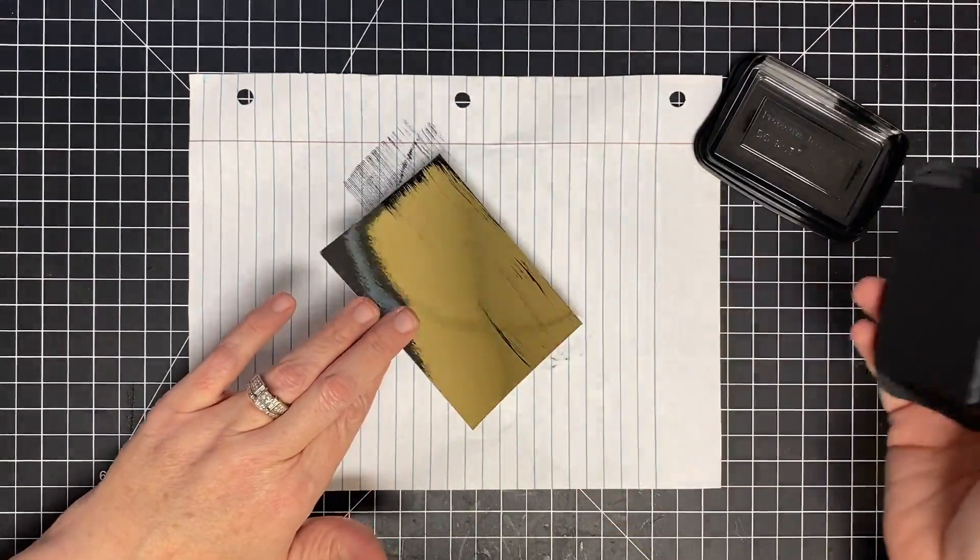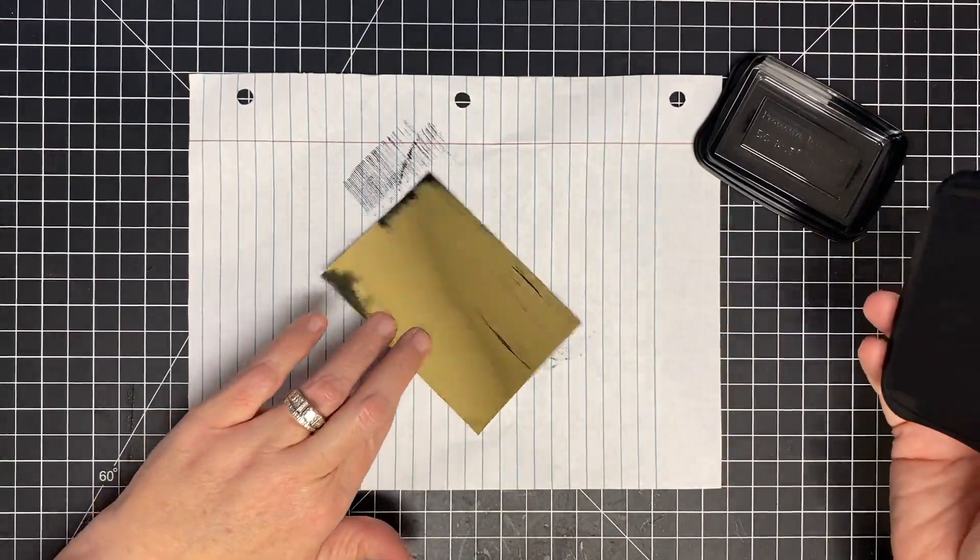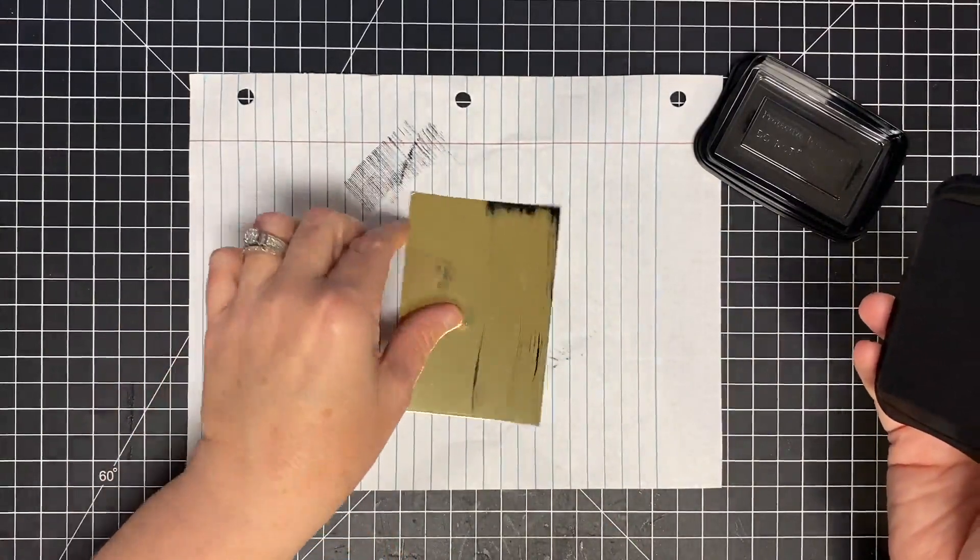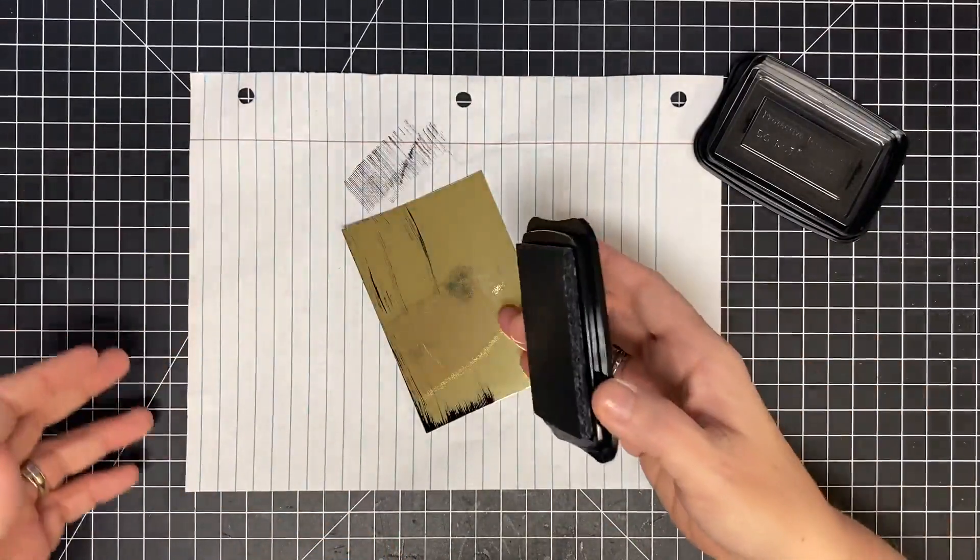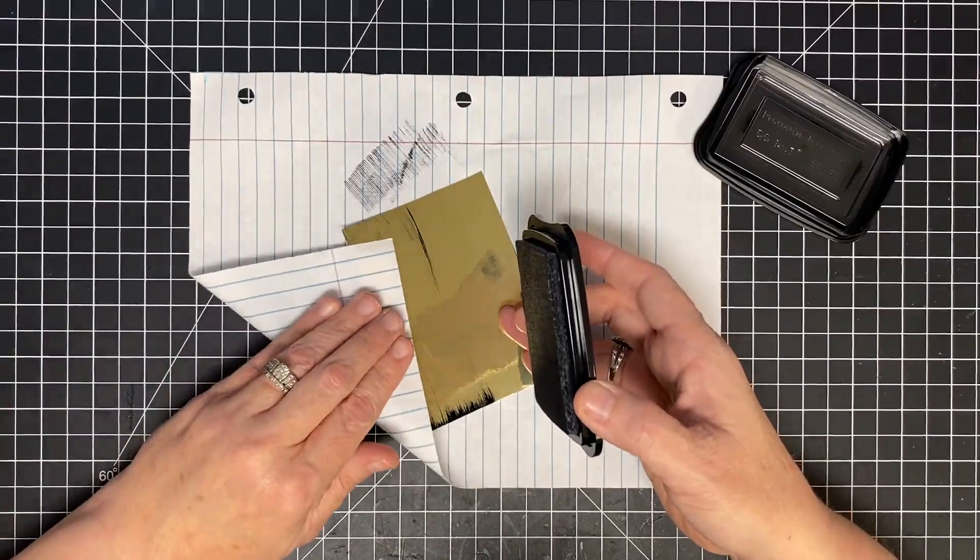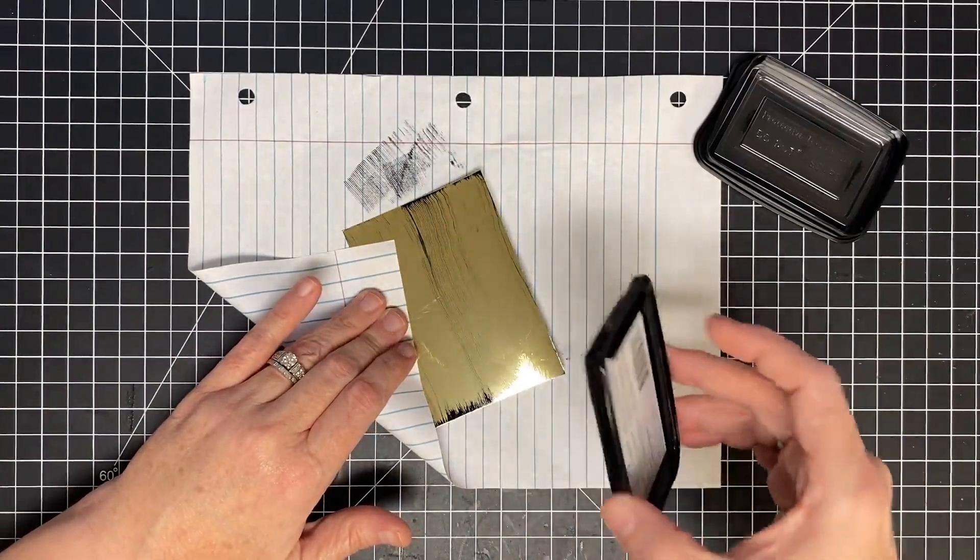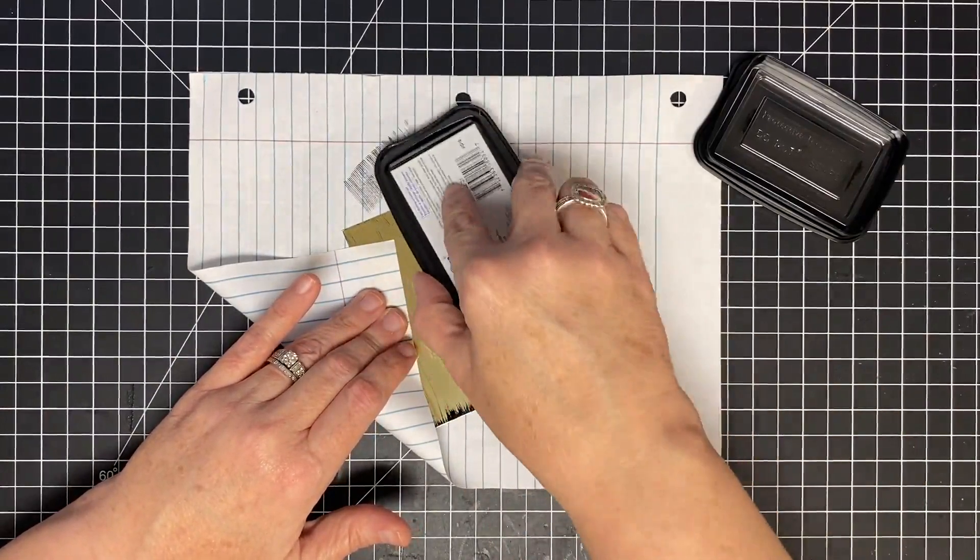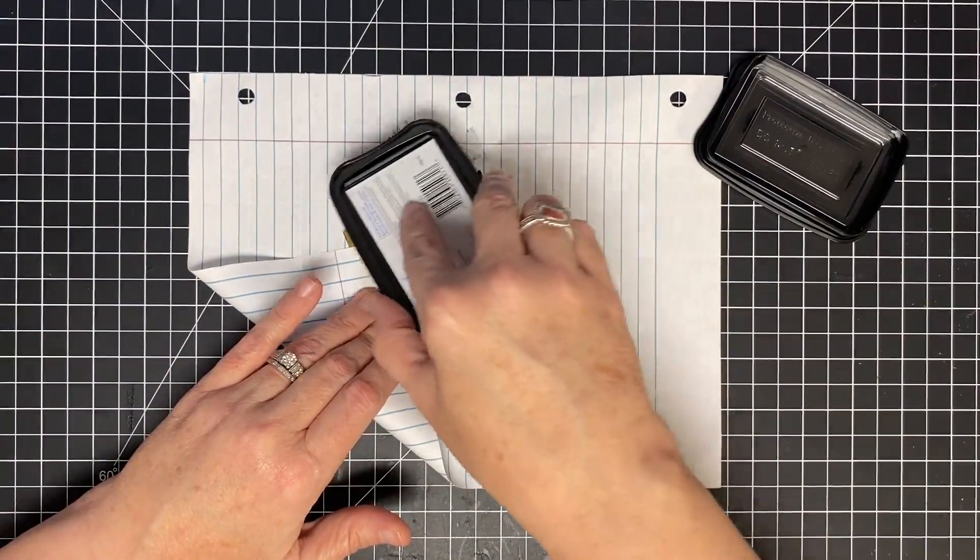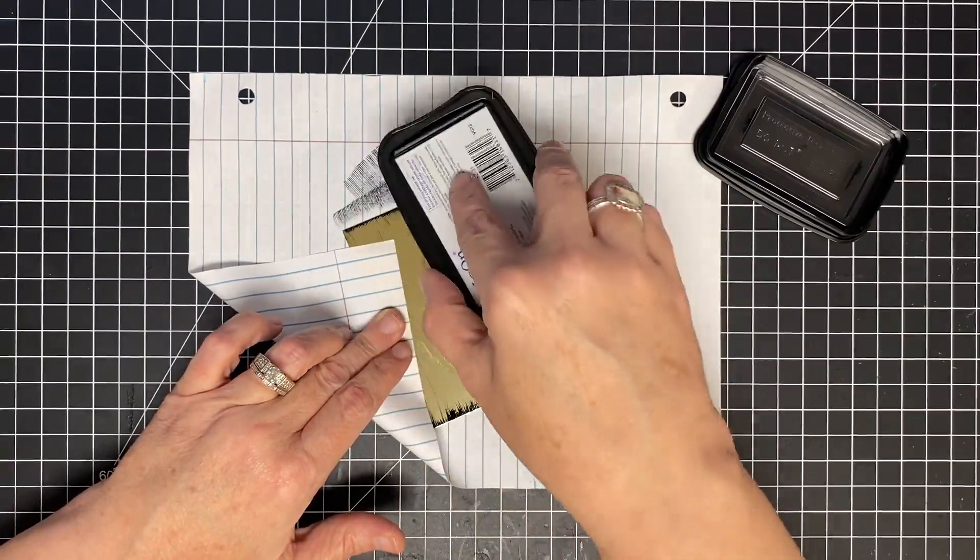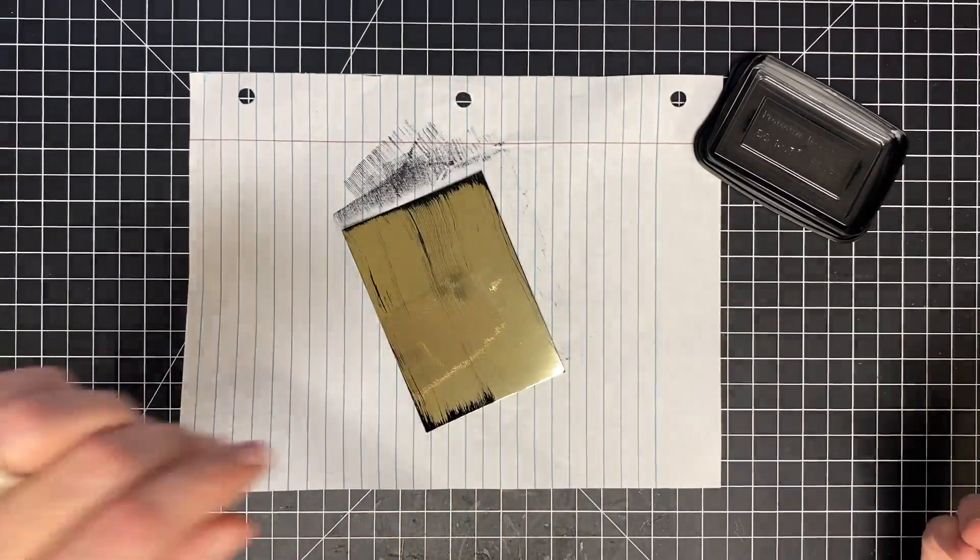You want a heavier edge coverage with less on the rest of the paper. I'm going to turn this around, and I'll show you something else. Take your paper and fold it up so you don't get your hands on it or in it. Again, I want more at the edge, and then just a light drag everywhere else.